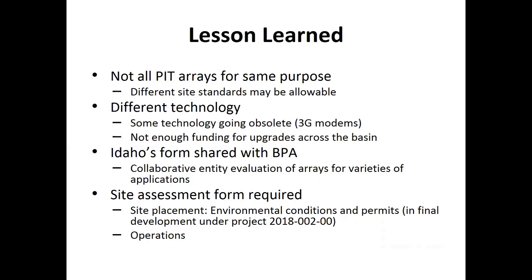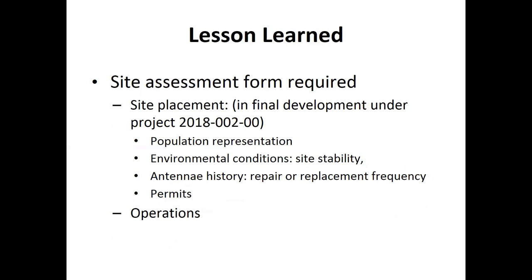One of the other things comes down to site assessment forms. When you go out, how do you assess a site for placement? What are the physical variables and environmental variables associated with the site? We're hoping to get preliminary reporting items — site assessment forms — under the pilot project of O&M. There's operations information, so if you go out to a site, you can do a site assessment and go to that website. From the site assessment form, when you look at placement, we're looking at population representation, environmental conditions, facility, intent, history, repair, replacement, and permits. Those are some of the things you might consider, related to operating.